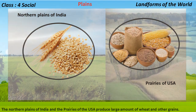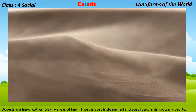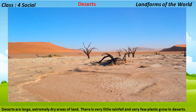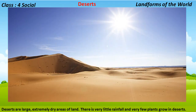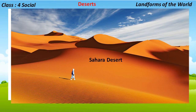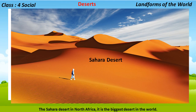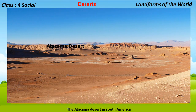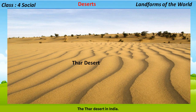Deserts are large, extremely dry areas of land. There is very little rainfall and very few plants grow in deserts. Deserts have extreme temperatures: in summer the days are very hot and the nights are cold; in winter the days are cool and the nights are very cold. The important deserts of the world are the Sahara Desert in North Africa, the biggest desert in the world; the Kalahari Desert in southern Africa; the Atacama Desert in South America; and the Thar Desert in India.